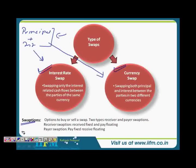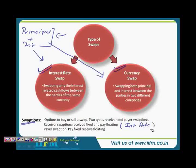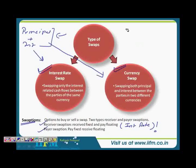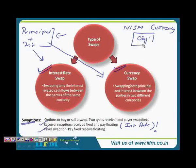There are also swap options — options on swap. There are two types: one is the receiver swap option, wherein you receive fixed and pay floating. We are talking about the interest rate — there are two types: fixed and floating interest rate. When you receive a fixed interest rate payment and pay a floating interest rate, that becomes a receiver swap option. Likewise, the payer swap option is where you pay fixed and receive floating. There is a whole lot more study to do on options and swap options, but from the NISM currency perspective the objective is limited to what has been mentioned in the book.